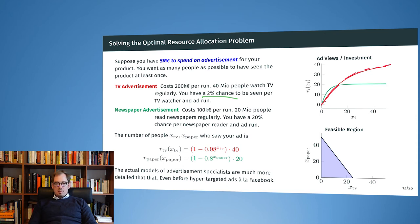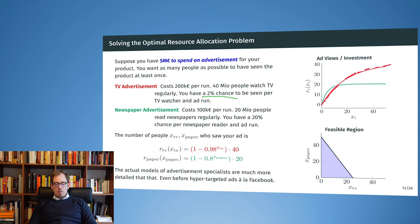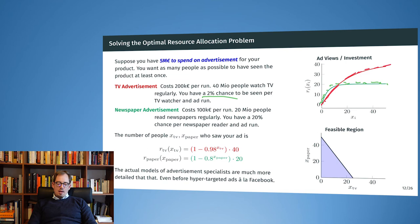The second channel is newspaper advertisement, also costing 100,000 euro per run, with 20 million readers and a higher chance of the reader seeing the ad. The convergence is a little faster and caps at 20 million people, since on the second run only 80% of 20 million remain who might see the ad for the first time.